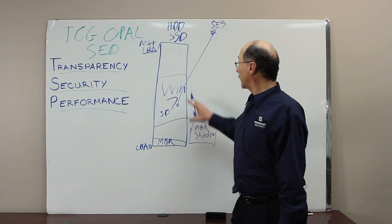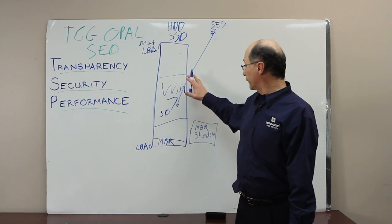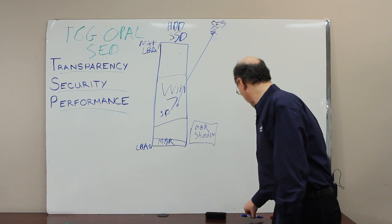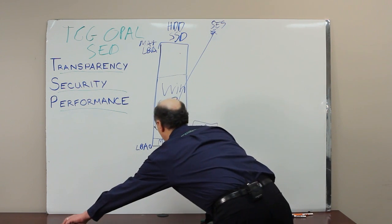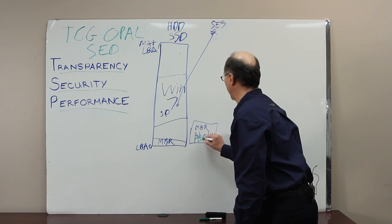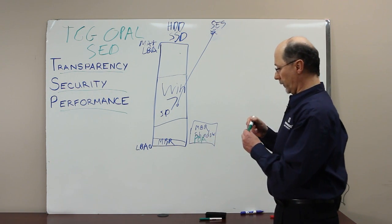The MBR shadow is off the map of the drive. It's inaccessible to the operating system. Once it creates the MBR shadow, it loads down into the MBR shadow the pre-boot authentication code and locks the drive.